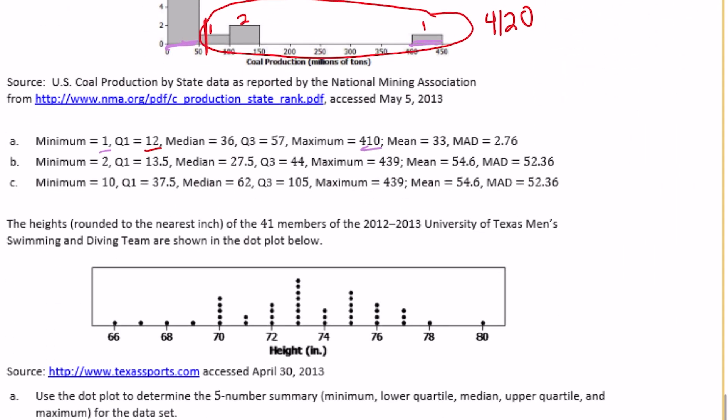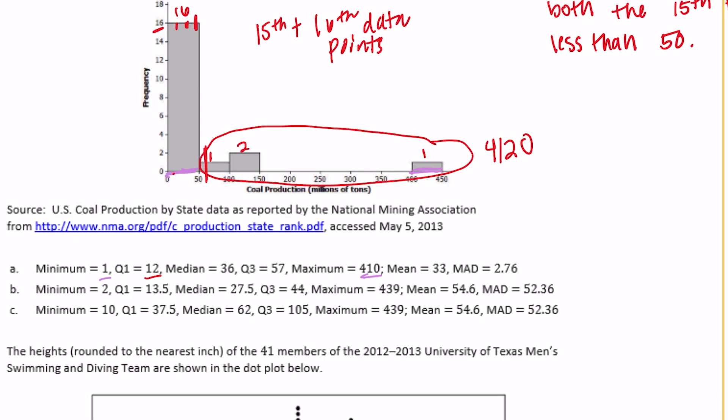Let's look at B. The minimum could be 2, quartile one 13.5, so again everything should fall between 0 and 50. Median 27.5 works. Quartile 3 is 44, so that's more realistic, it falls between the 0 and 50 mark but more towards the end because it is the 75th percentile. The maximum could be 439, that works. Mean 54.6, I would say that could be true since we do have this very large outlier that would bring the mean up to a higher number. The mean average deviation could be 52.36, I agree that would work. So from what I see, I think that B is the correct answer, but let's double check with C first.